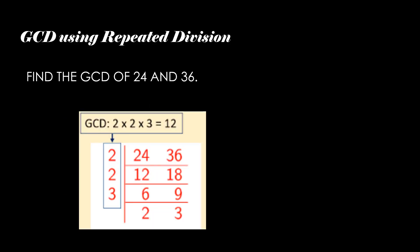We can also find the GCD using repeated divisions. So let us divide 24 and 36 together by 2. So it divides equal without any remainder: 12, 18. Again when we divide, we get 6 and 9. When we divide 6 and 9 by 3, we get 2, 3.